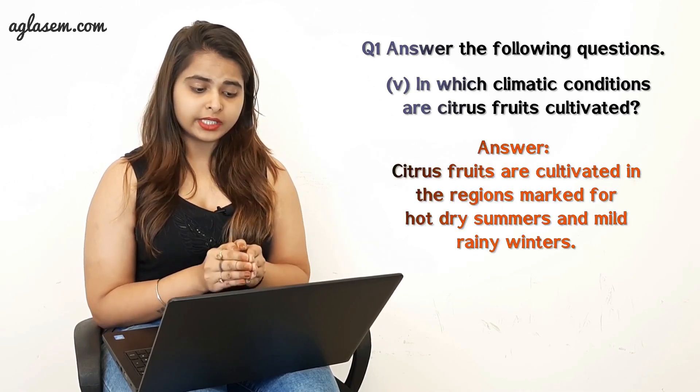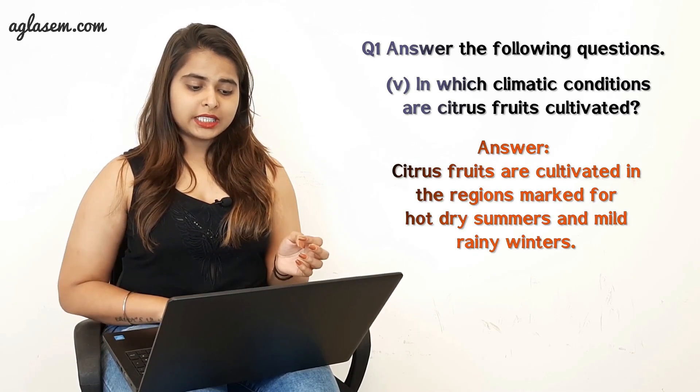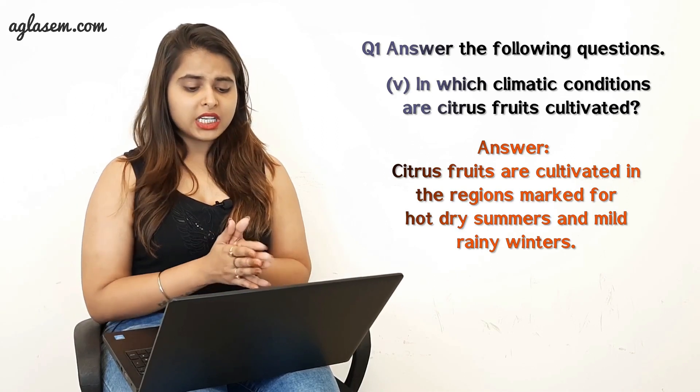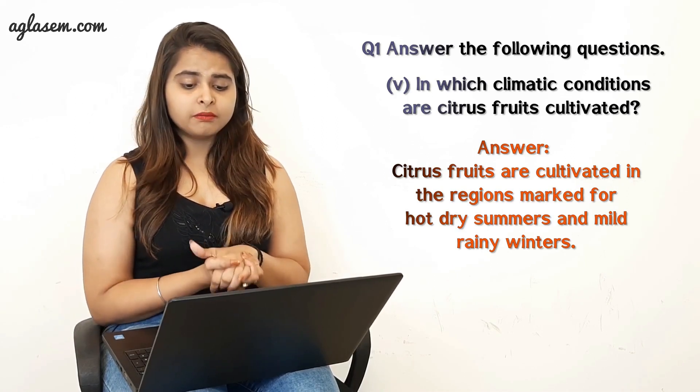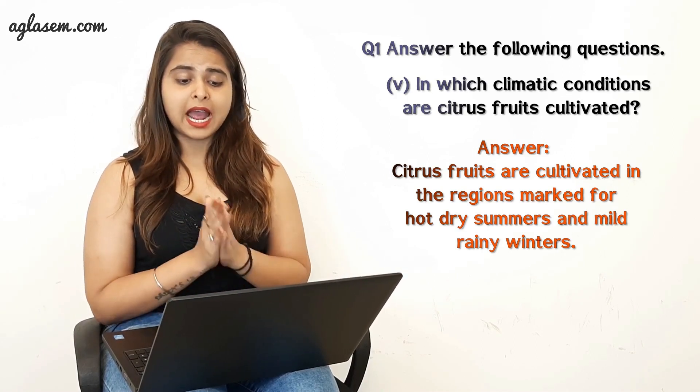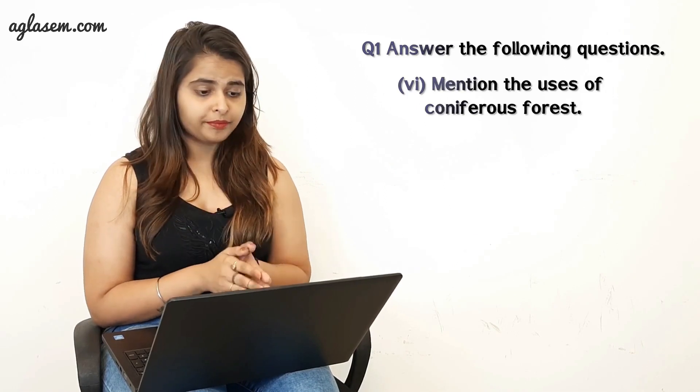The next question asks: in which climatic conditions are citrus fruits cultivated? The answer is that citrus fruits are cultivated in regions marked by hot, dry summers and mild, rainy winters.